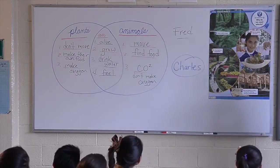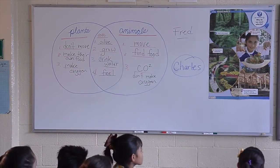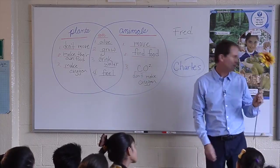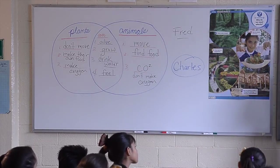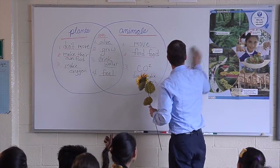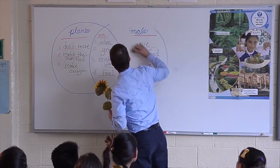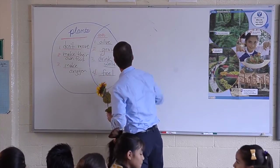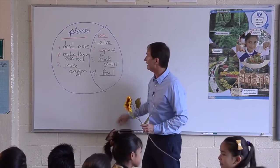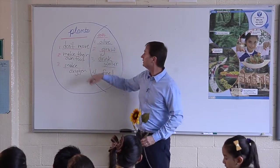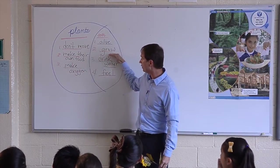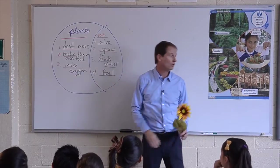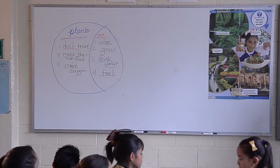We're going to talk about why we need plants — why we need Fred. Fred is more than just a pet; he's very important. Let's erase Fred, erase me, and erase animals for now so we can focus on plants. You've already told me a lot about plants: they don't move but they're alive, they make their own food, they grow, they make oxygen, they drink water.